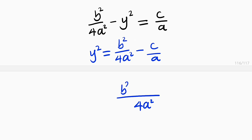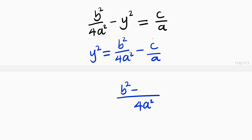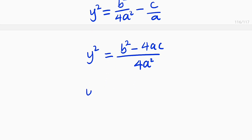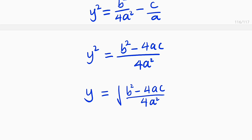Then you subtract: take a, plug it in — you're going to obtain 4a — then multiply by the numerator c to get 4ac. So y squared equals b squared minus 4ac all over 4a squared. To find y, take the square root of both sides: y equals the square root of b squared minus 4ac divided by 4a squared.